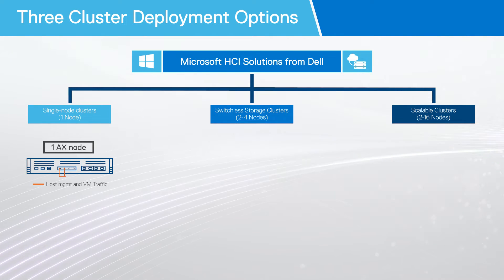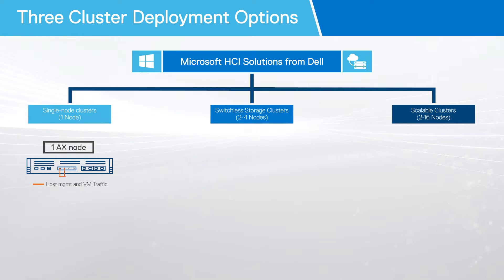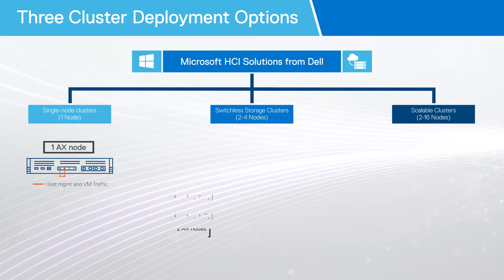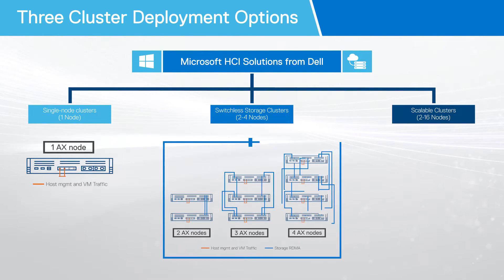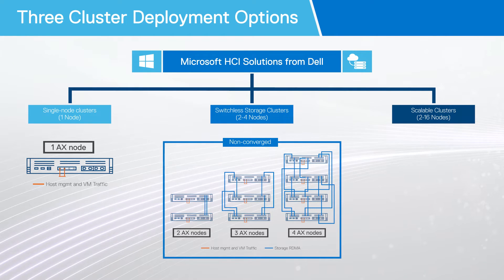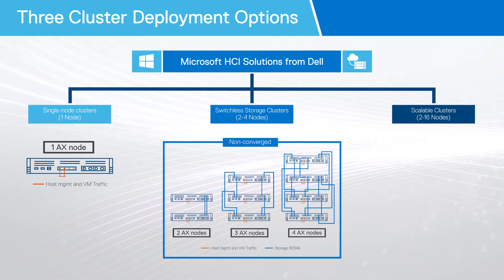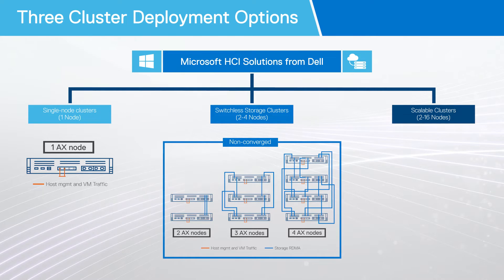In most cases, they have very light network requirements, starting as low as only two network port connections for management and VM traffic. Switchless Storage Clusters come in two-, three-, or four-node cluster sizes, and are always configured with non-converged topology. In non-converged scenarios, the network traffic is split in two, where one or more adapters are used for management and VM traffic, and one or more other adapters are used for the RDMA storage traffic.